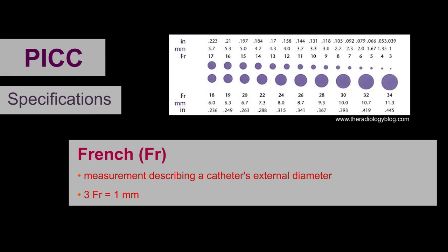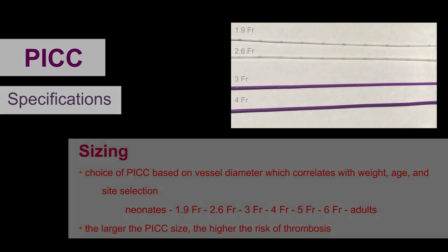The unit of measurement describing a catheter's external diameter is French. One rule of thumb is that 3 French equals 1 millimeter. The choice of PICC is based on vessel diameter, which in turn is correlated with weight, age, and site selection.